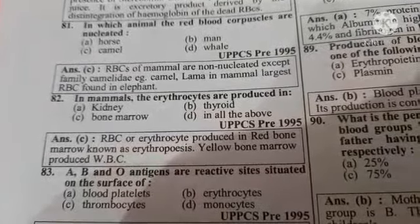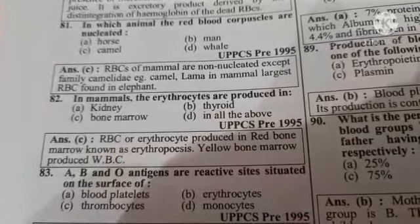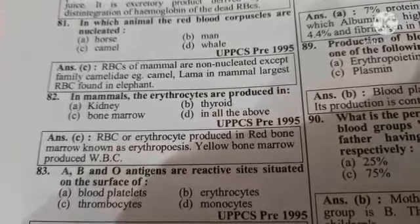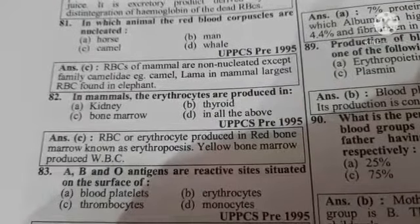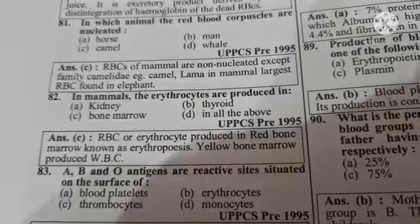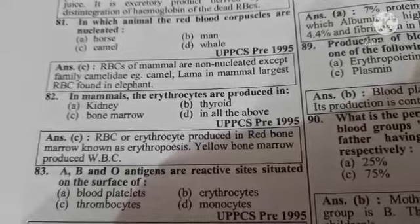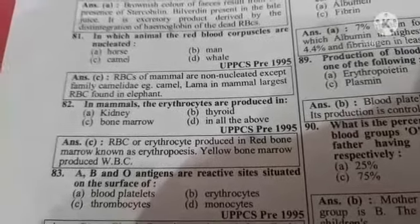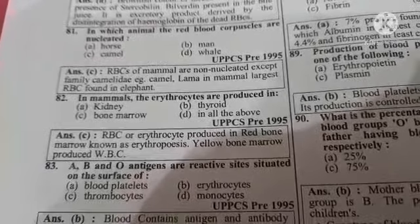Next question: A, B and O antigens are reactive sites situated on the surface of — Option A: blood platelets, Option B: erythrocytes, Option C: thrombocytes, Option D: monocytes. The correct answer is Option B: erythrocytes.